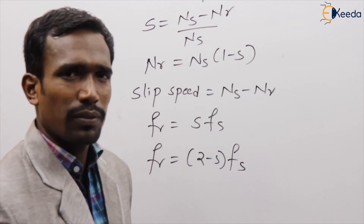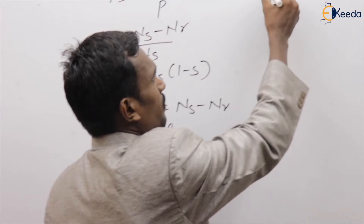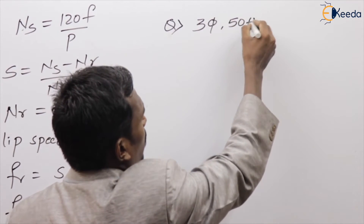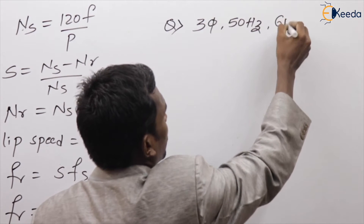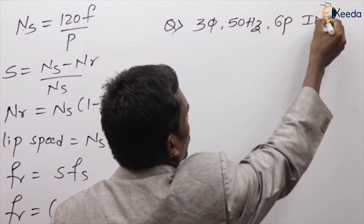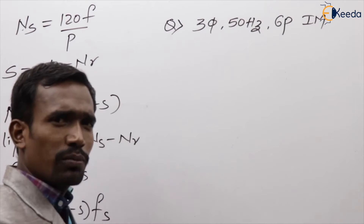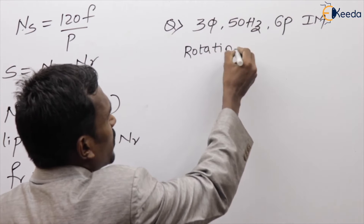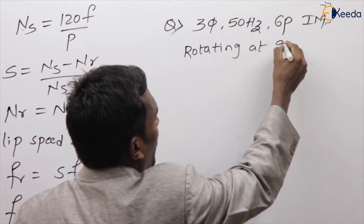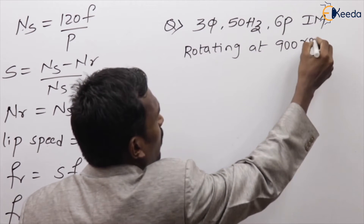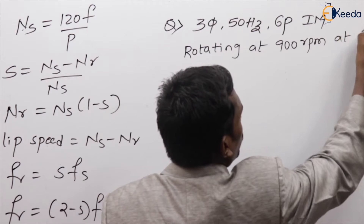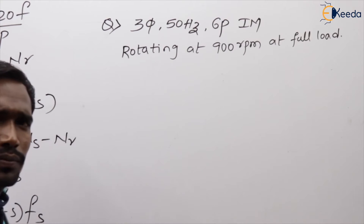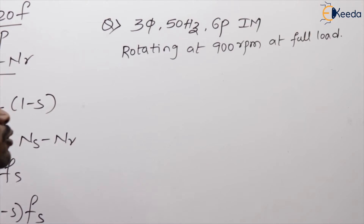Take one example question: a three-phase, 50 Hz, six-pole induction motor rotating at 900 RPM at full load.